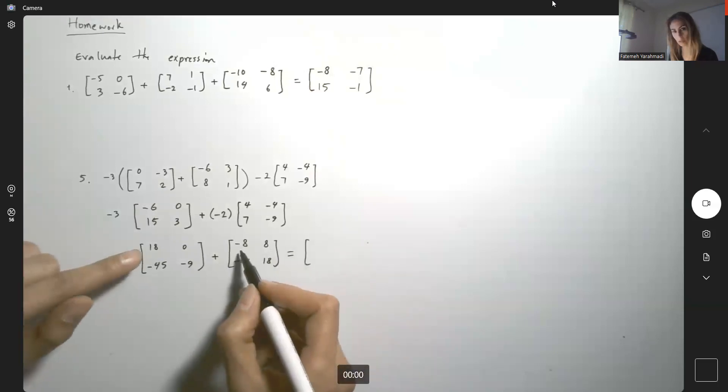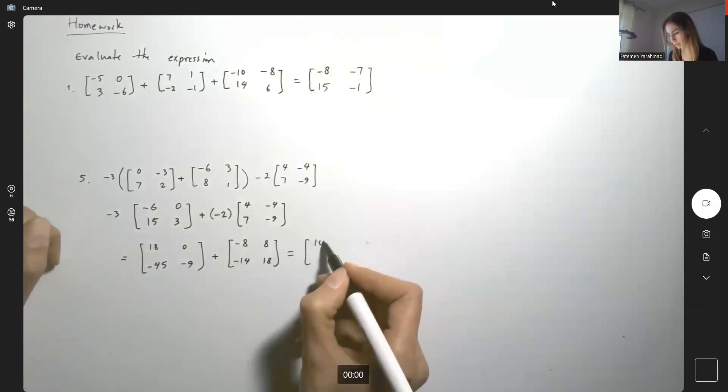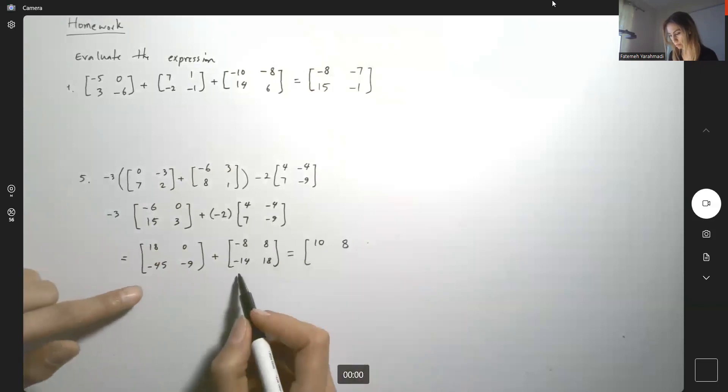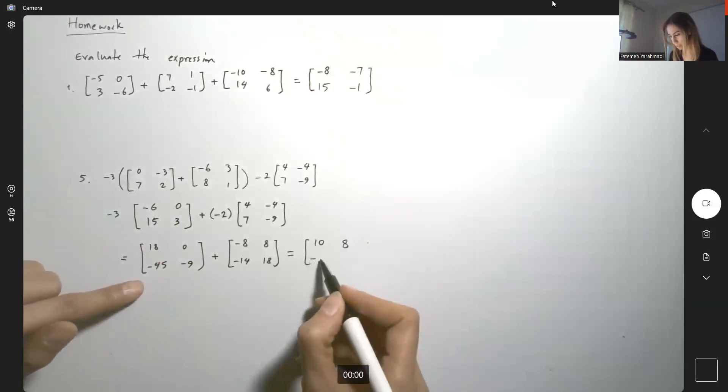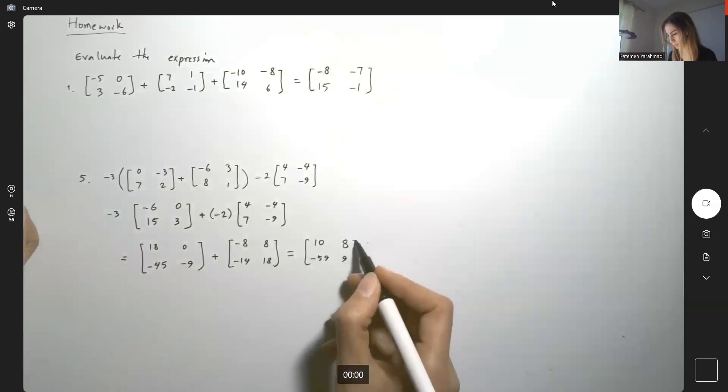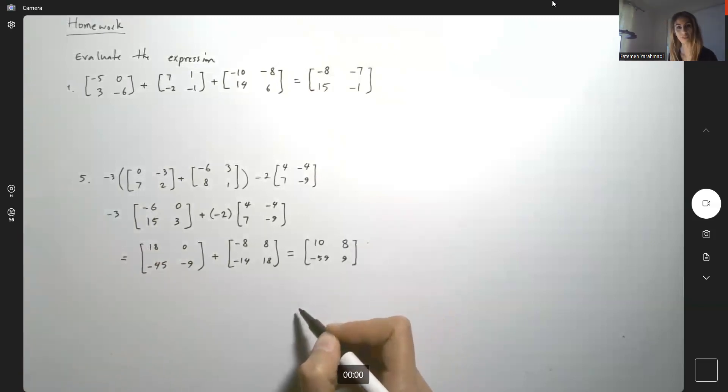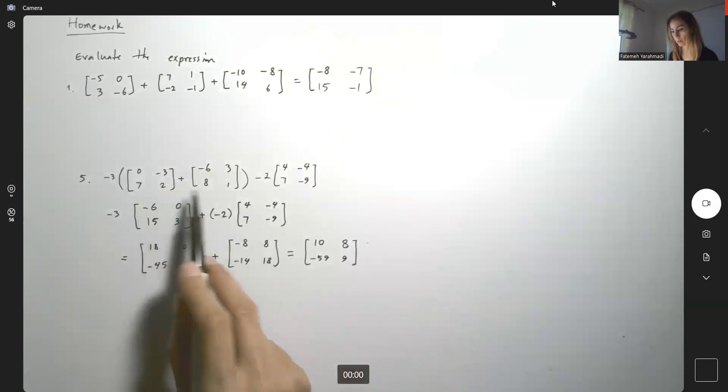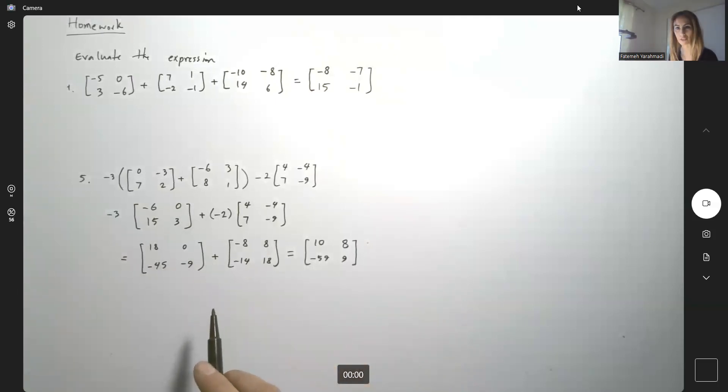Which is equal to, well, the corresponding entries, you have a 10, you have 8. Then here you have negative 59 and then here you have 9. This is the result of the scalar multiplication and adding these matrices.